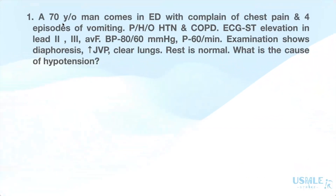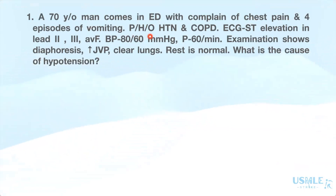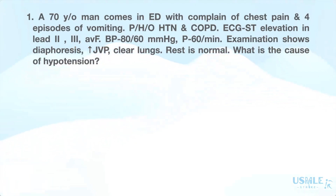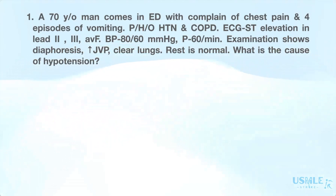The case is a 70-year-old man who comes into the emergency department with a complaint of chest pain and four episodes of vomiting. He has a past history of hypertension and COPD. ECG shows ST elevation in leads 2, 3, and AVF. Blood pressure is 80/60 mmHg, pulse is 60 per minute, and examination shows diaphoresis, increased jugular venous pressure, and clear lungs. Rest is normal.